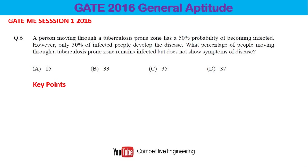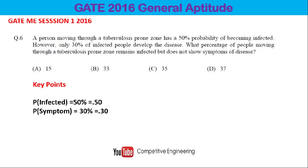The key points in this question are: the probability of getting infected is 50%, which we write as 0.50, and the probability of showing symptoms is 30%, written as 0.30. So when a person moves through a tuberculosis-prone zone, the probability of getting infected is 50%, and even if infected, the probability of showing symptoms is only 30%.